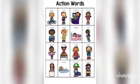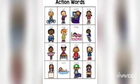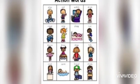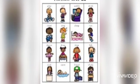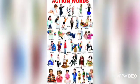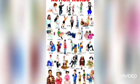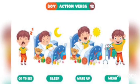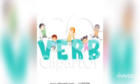Can you recall? Words like sleep, eat, drink, dance are called action words. They tell us what someone or something does. Action words are also called verbs.